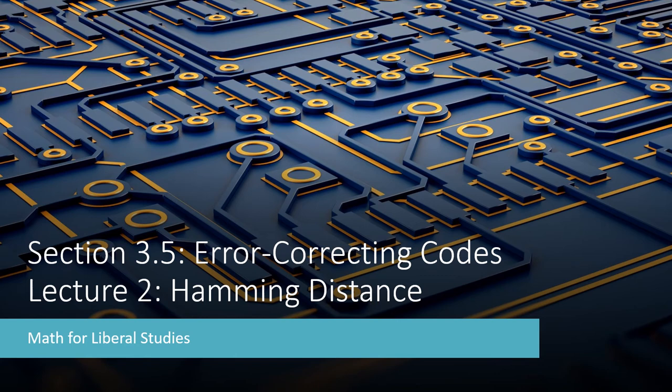This is the second video for section 3.5 on error correcting codes. In this lecture, I'll be talking about Hamming distance.